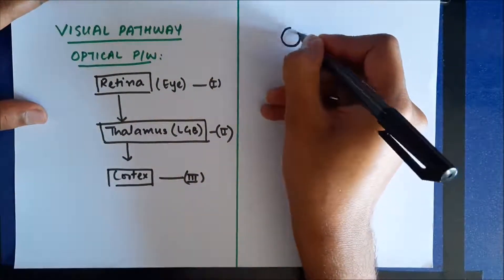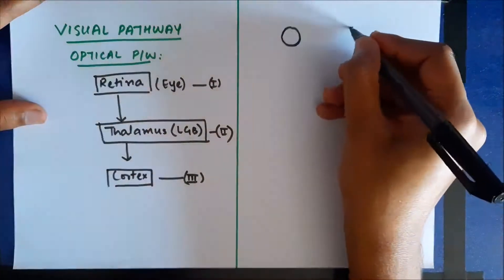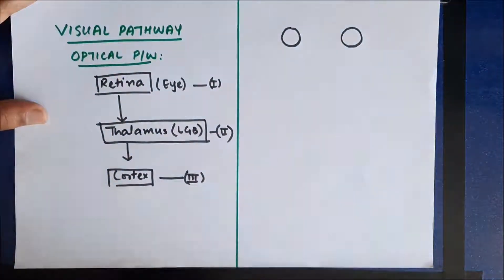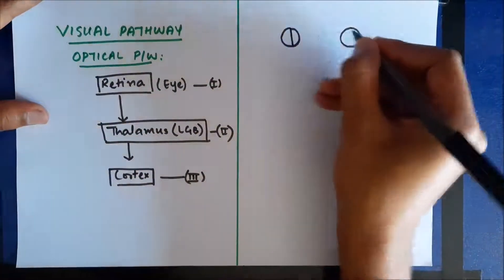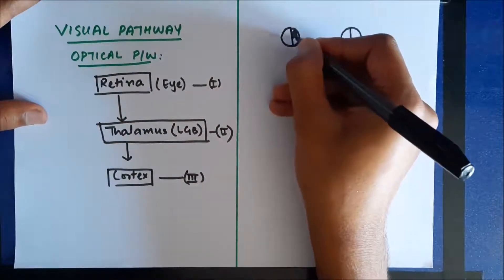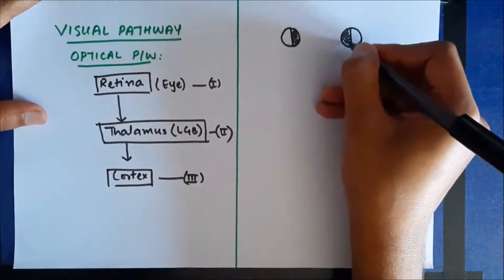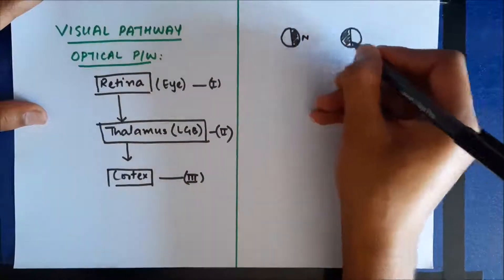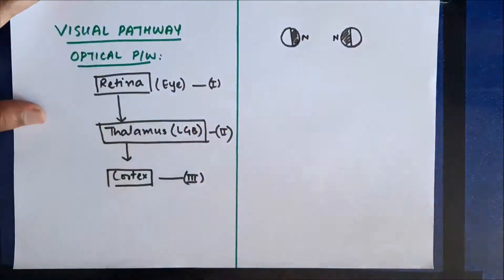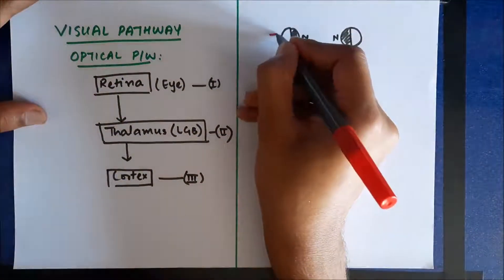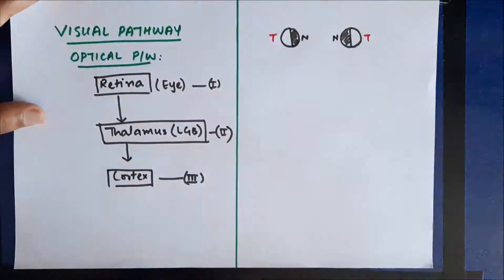Let us start with two eyes and divide each into two parts. One part is the nasal part and the other is the temporal part. Similarly, in the other eye we have the nasal part and the temporal part.